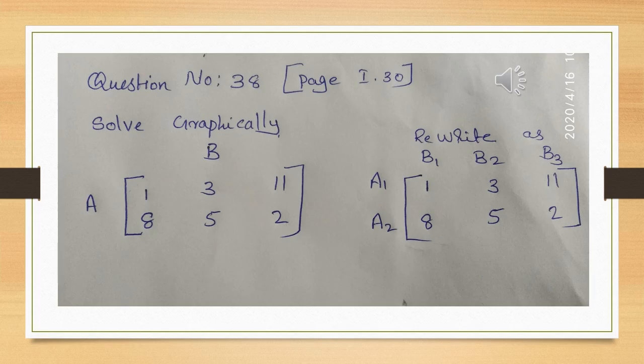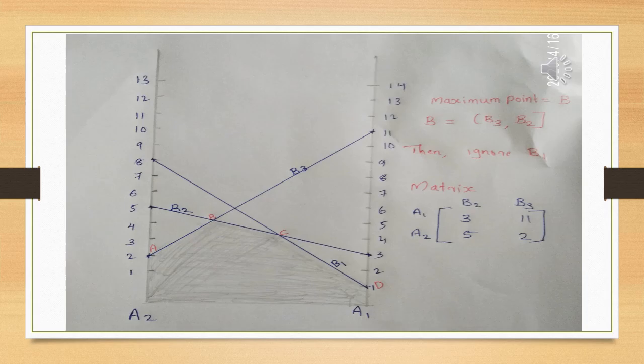We will add the three columns to apply the graphical method. We will discuss the two strategies for player A. In this graph, we have to plot points for each of player B's strategies. For each strategy of B, we draw a line corresponding to A1 and A2.